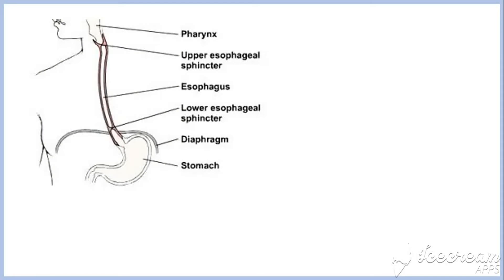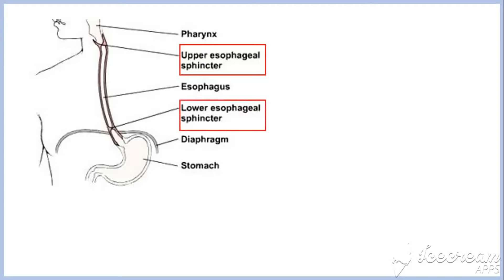The human esophagus has two sphincters at its proximal and distal ends to control the passage of food particles from the oral cavity to the stomach. They are the upper esophageal sphincter and lower esophageal sphincter respectively. Esophageal sphincters usually remain closed at rest.